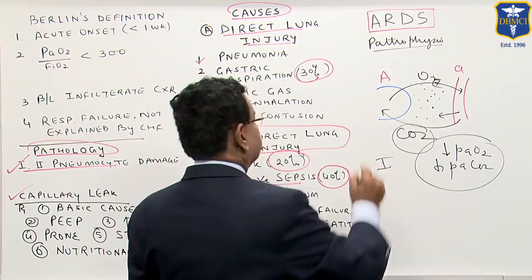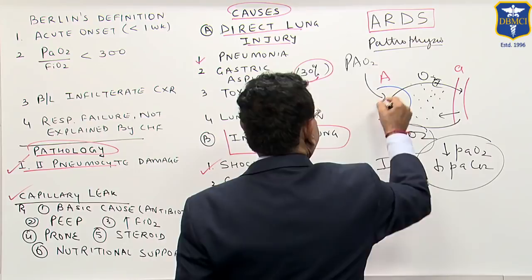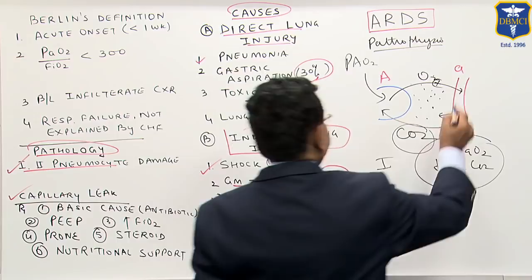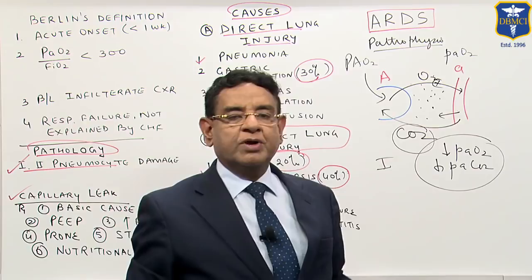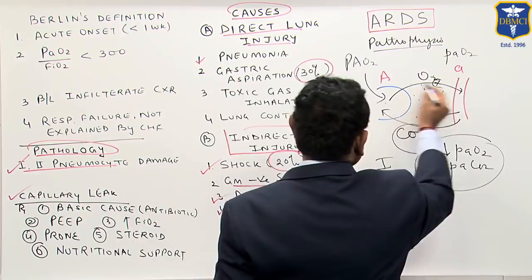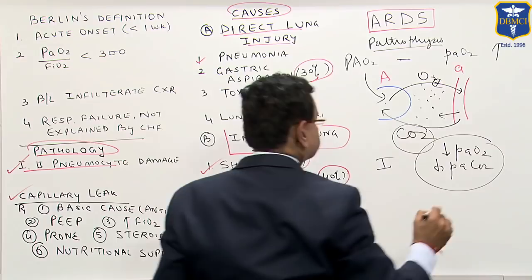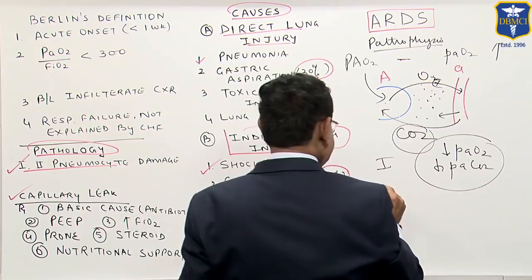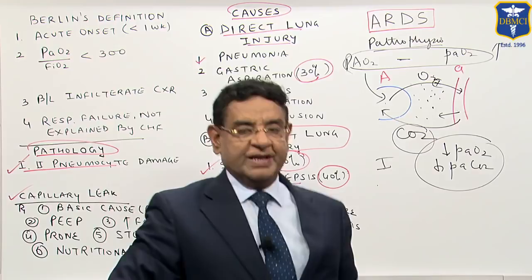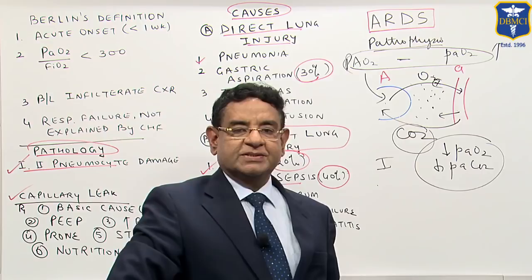What else? We have PAO2 — oxygen in the alveolus — and here is PaO2, pulmonary arterial oxygen. Since oxygen cannot go in, this A-a gradient is increased. This increased gradient is again a feature of type 1 failure, and that is the reason why we have type 1 failure in ARDS.